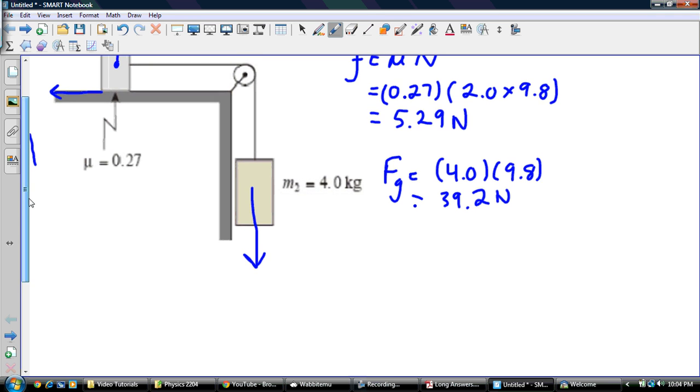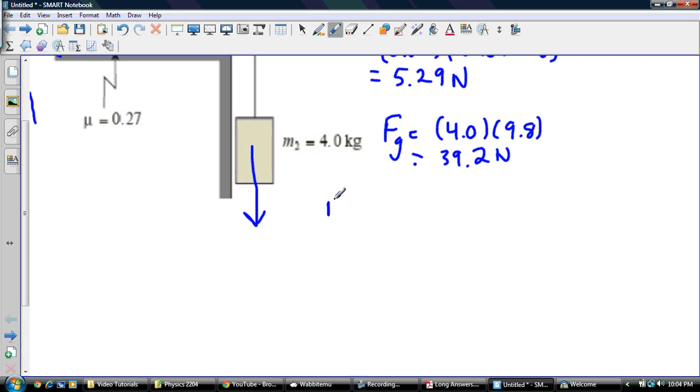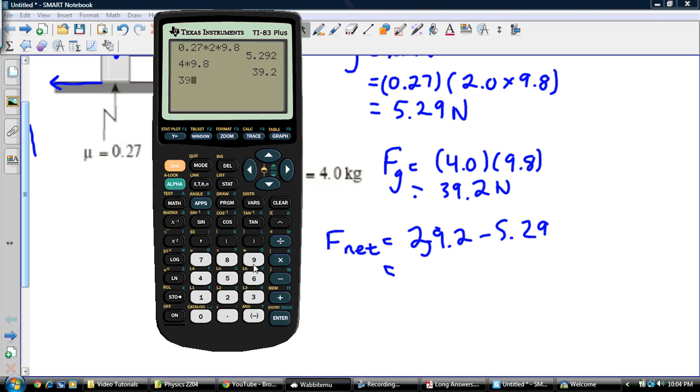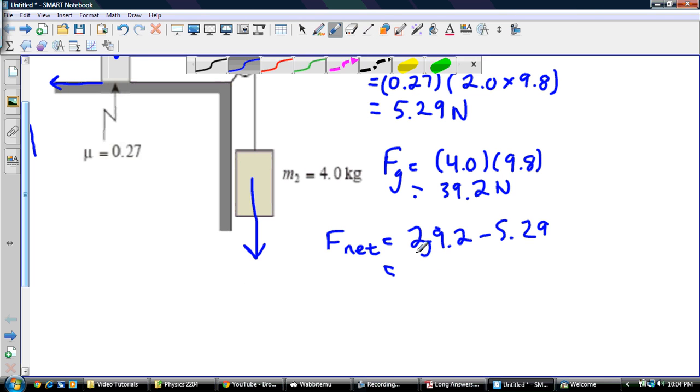So the net force of the system, that's the key, the system. So that's 39.2 newtons subtract 5.29 newtons. 39.2 subtract 5.29, and that's equal to 33.9 newtons.